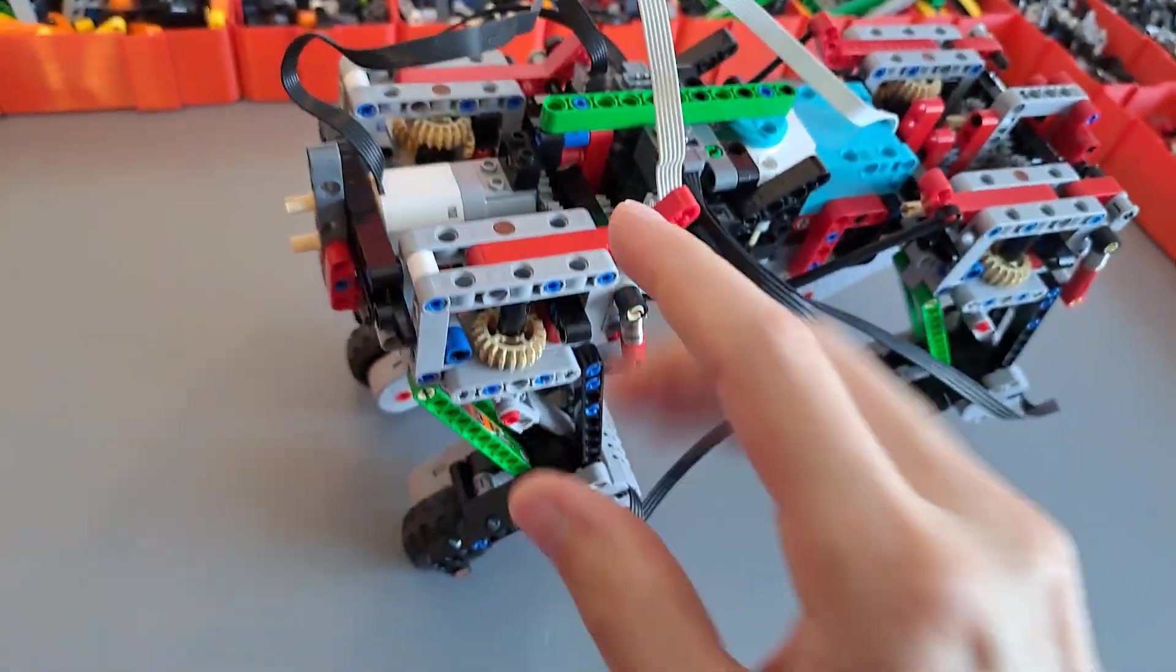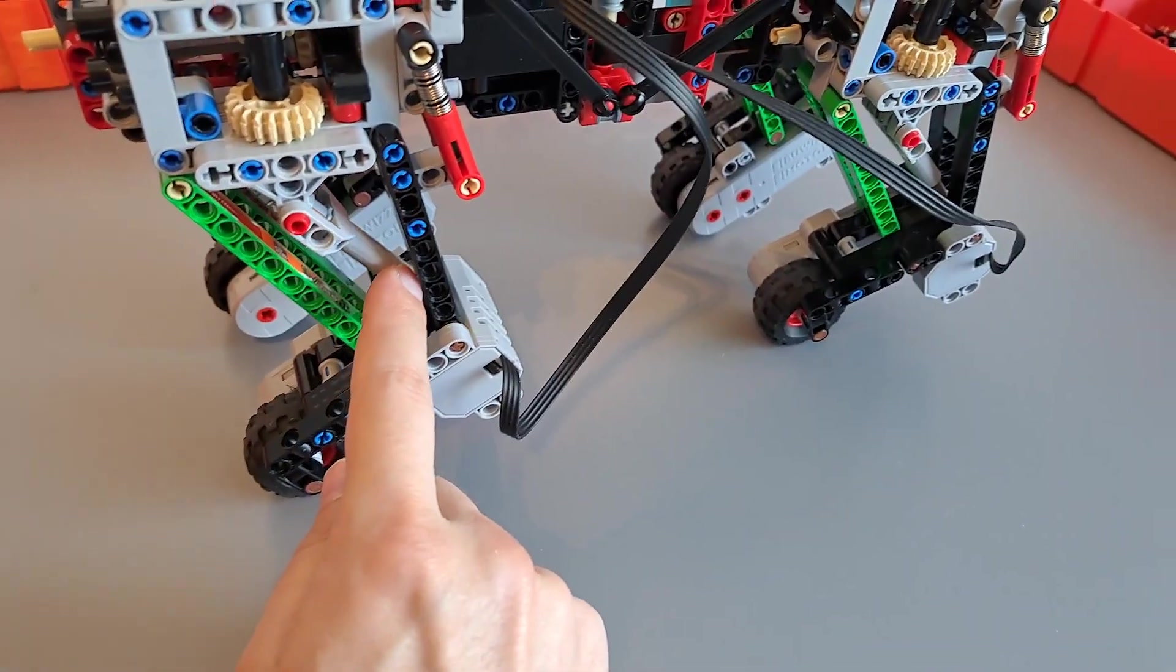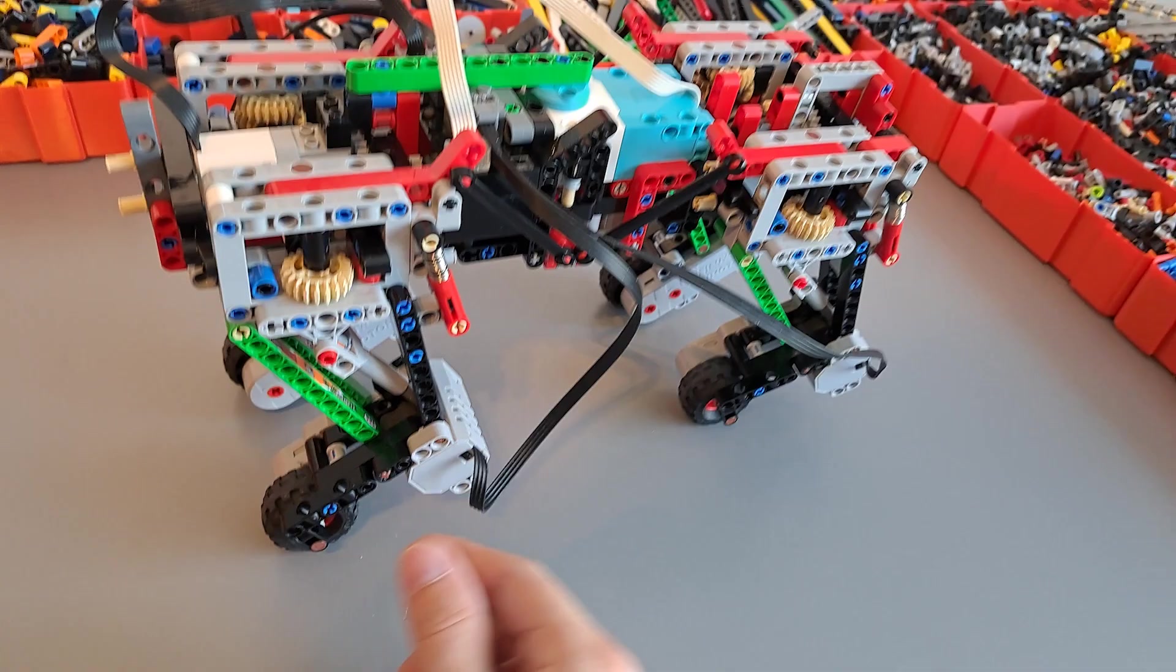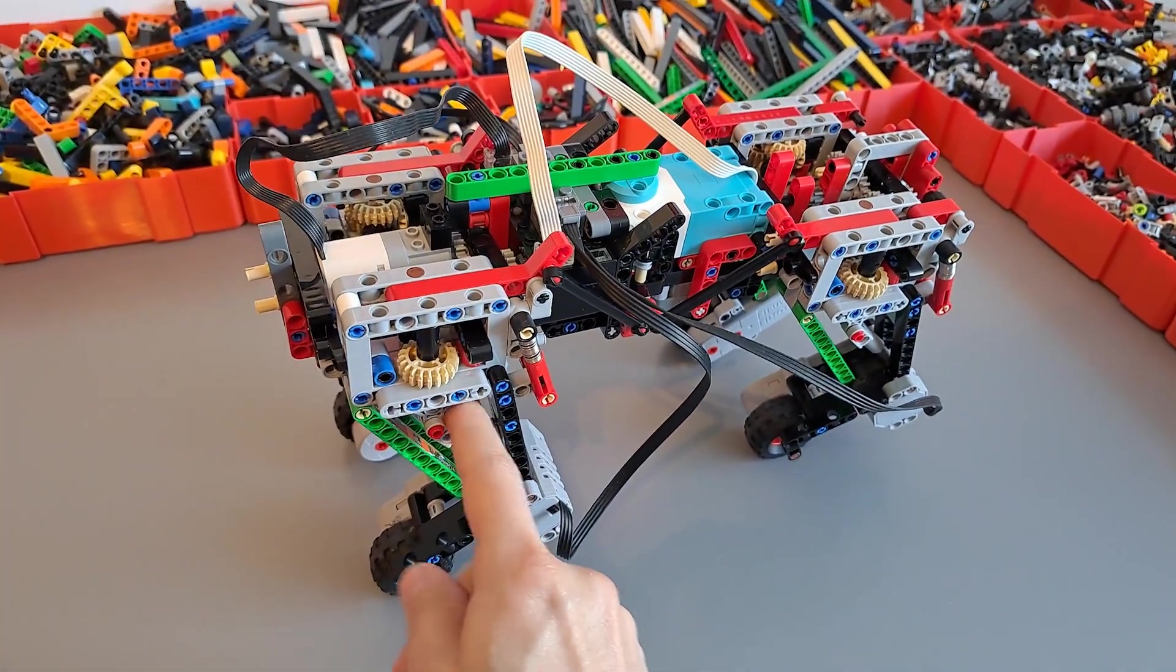And there's a sixth motor here which raises and lowers all the legs using the linear actuators here. And the shock absorbers help carry the weight, so the linear actuators don't have to carry all the weight.